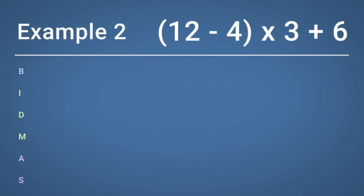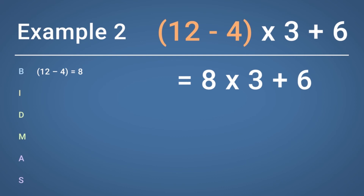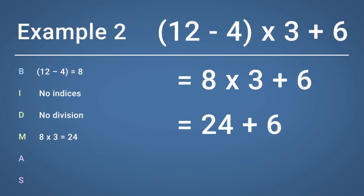Calculate 12 subtract 4 multiplied by 3, add 6. Following the BIDMAS rule, we know that we must first work out any calculations inside brackets. Here we have 12 subtract 4 inside of brackets. 12 subtract 4 equals 8. So we now have 8 multiplied by 3, add 6. Next, we look for any indices in the sum. As there are no indices, we move on to division and multiplication. There is no division, but there is a multiplication. 8 multiplied by 3 equals 24. So we are now left with the simple sum of 24 add 6.